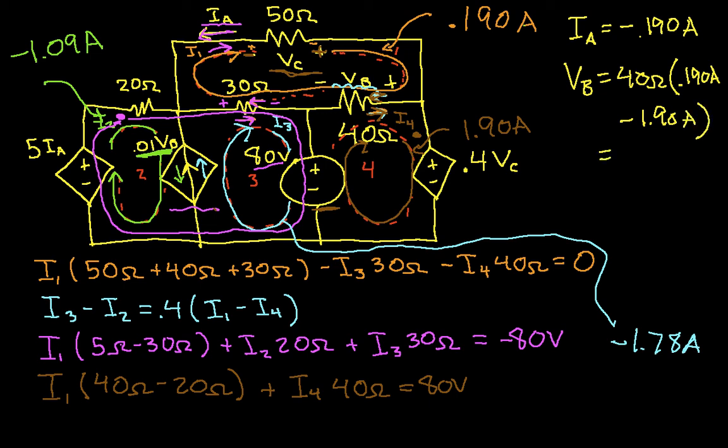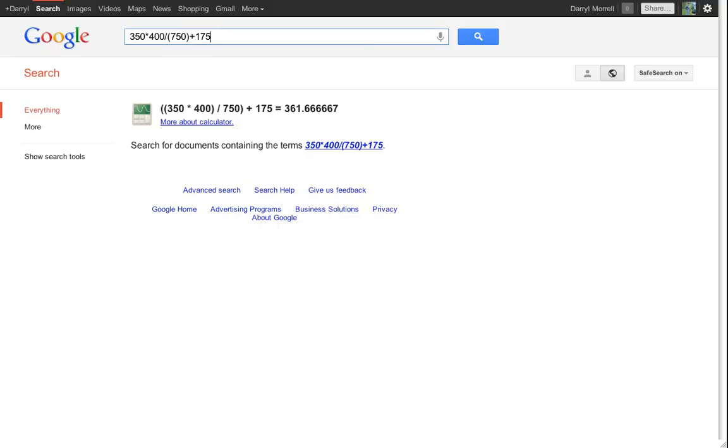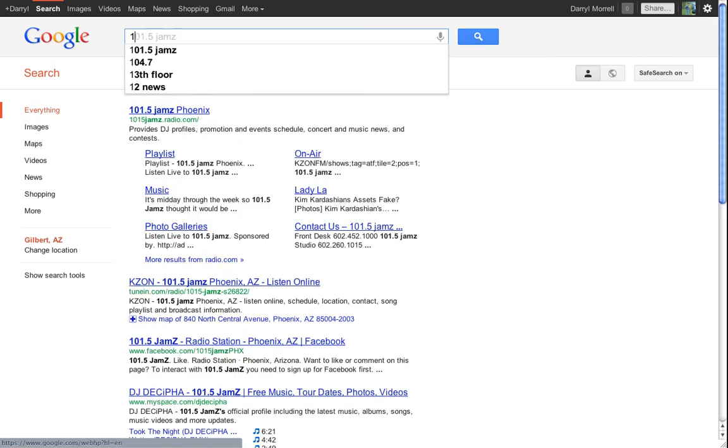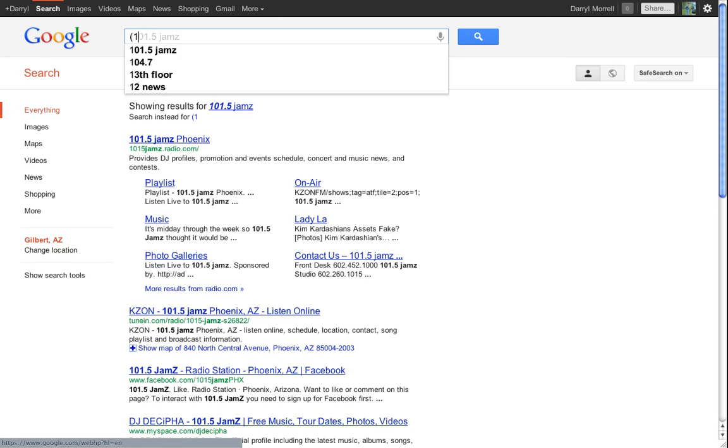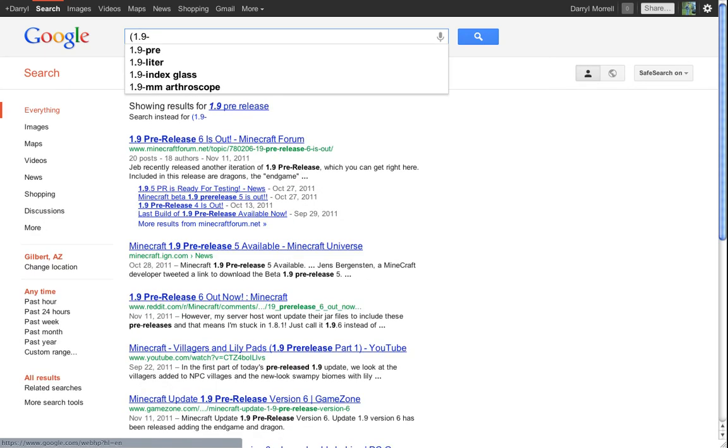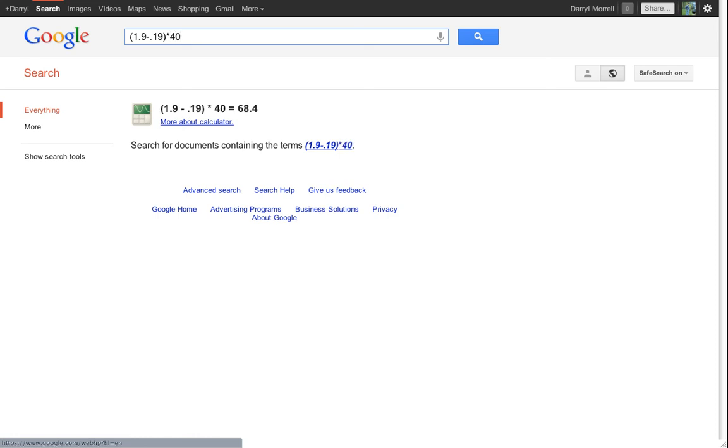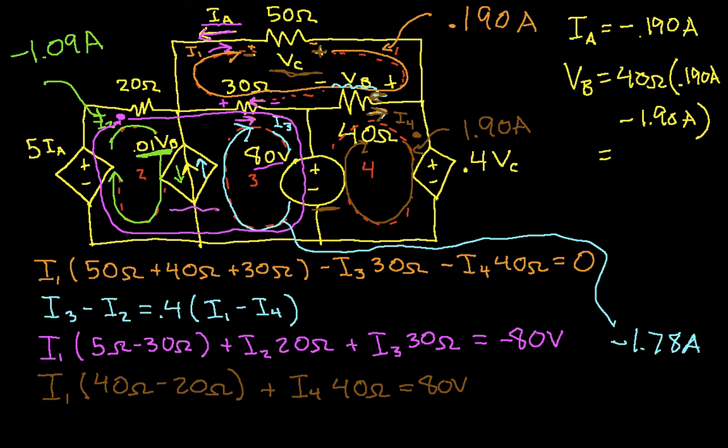and that is, if I work that out, we'll use Google as our calculator, that's 68.4. Okay, so V sub B would be 68.4 volts.